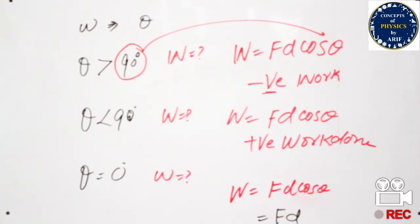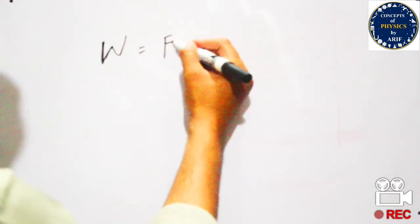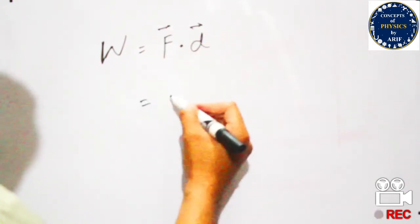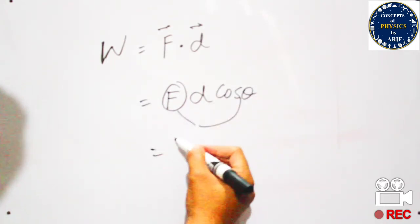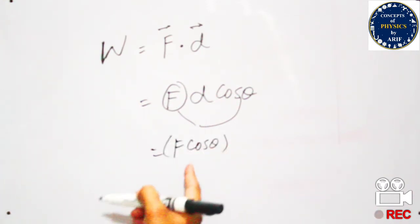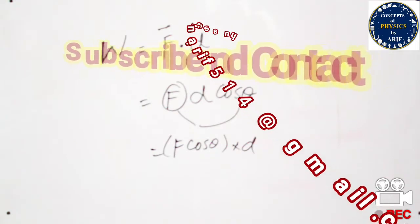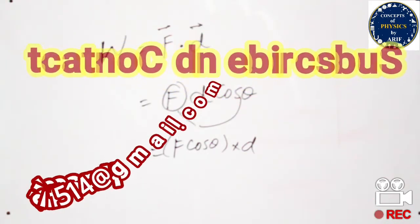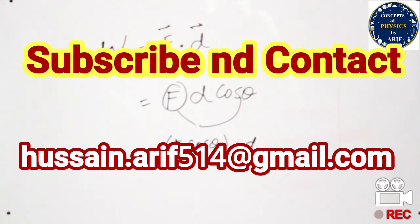In summary, work is a scalar quantity which is the dot product of two vector quantities — force and displacement. It depends upon the applied force, displacement, and cos theta, where F cos theta is the force component along the direction of displacement. Work done also depends upon the direction of force.